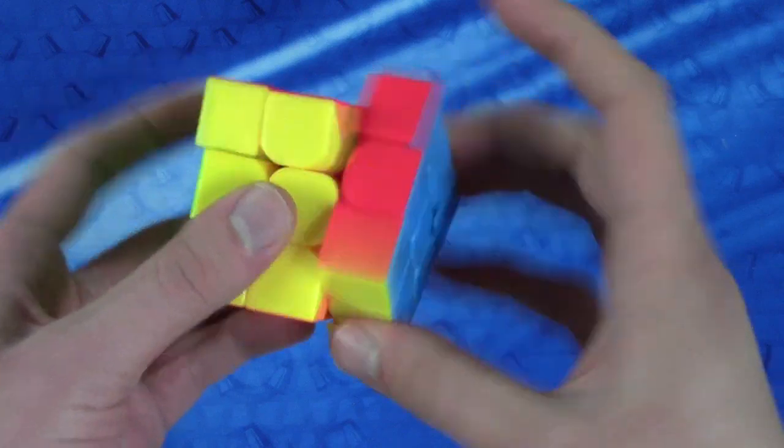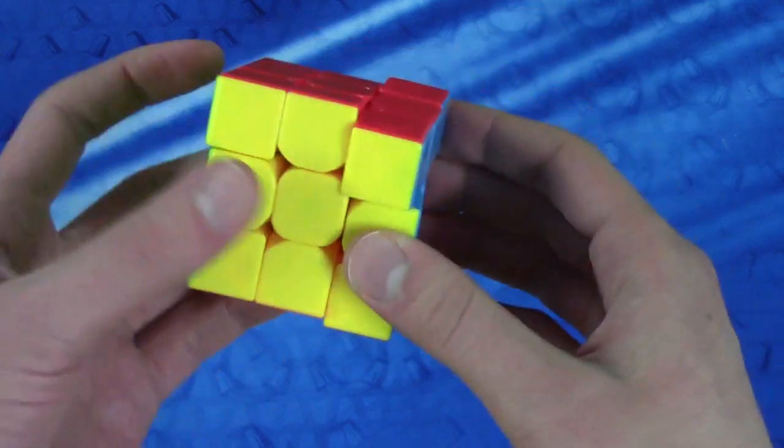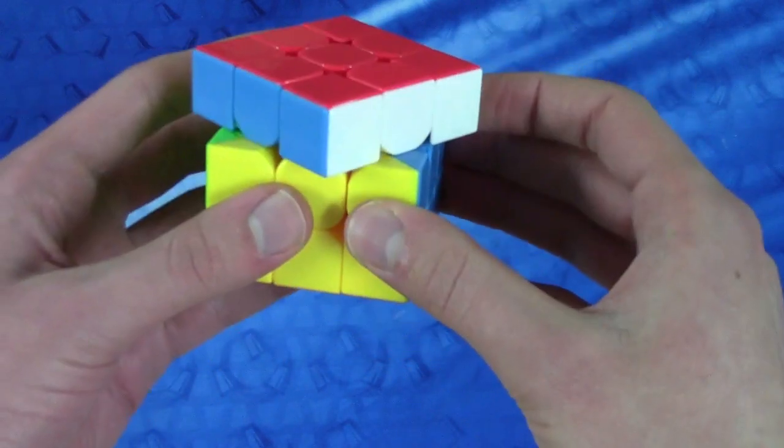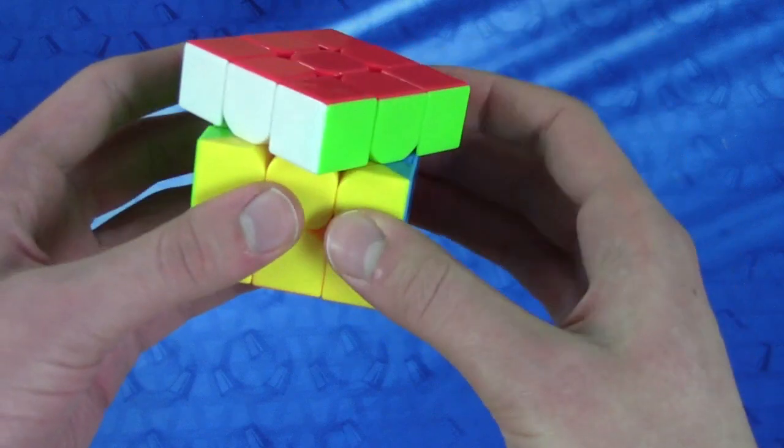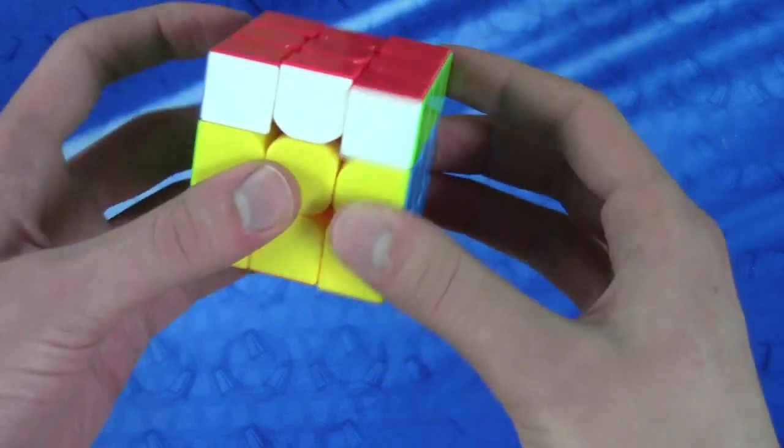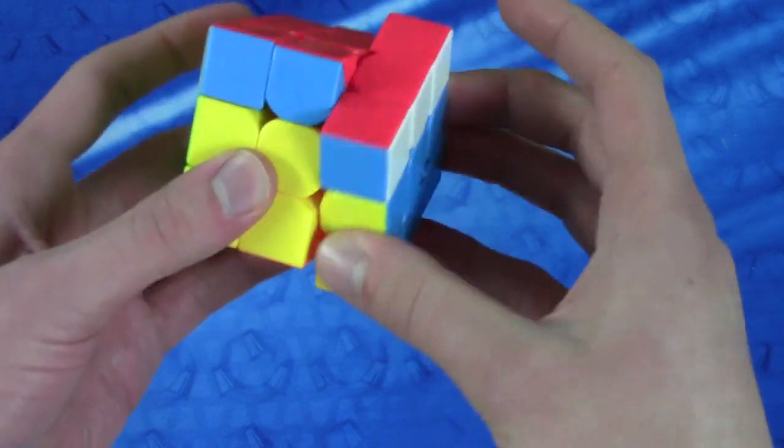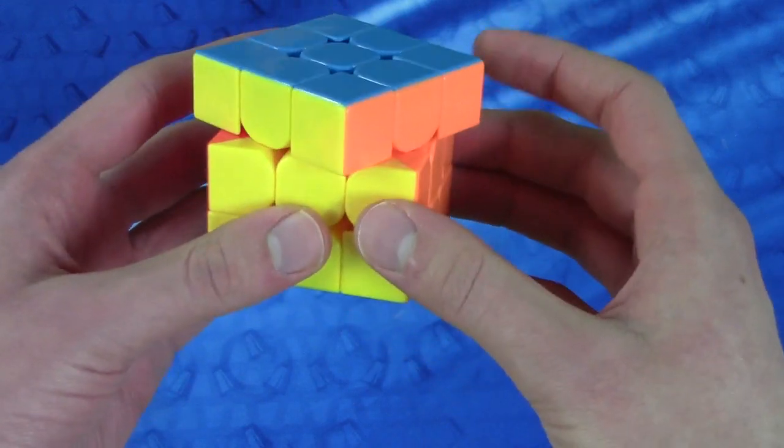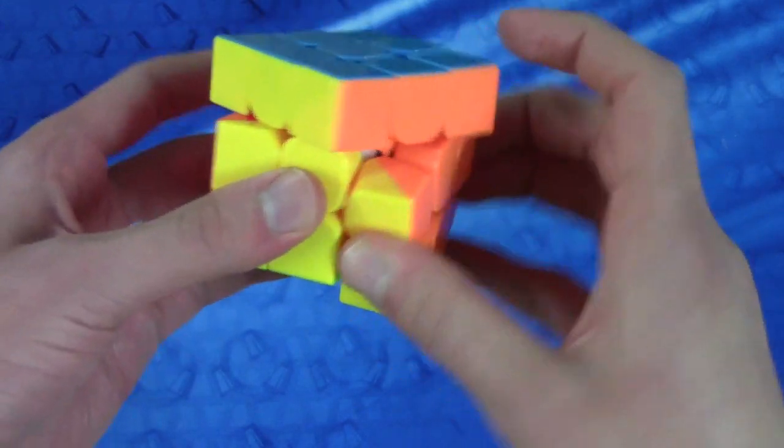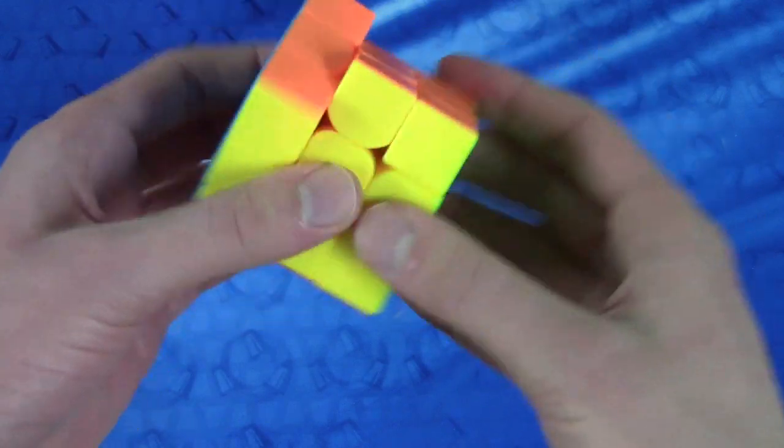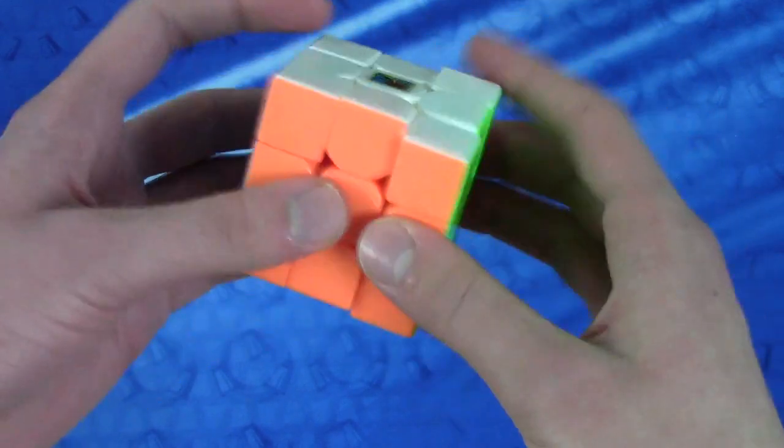As you can see, it corner cuts 45 quite well. That is quite amazing for corner cutting. It does sometimes get jammed up like that, or like this. Usually, it does go through if you put enough force to it.